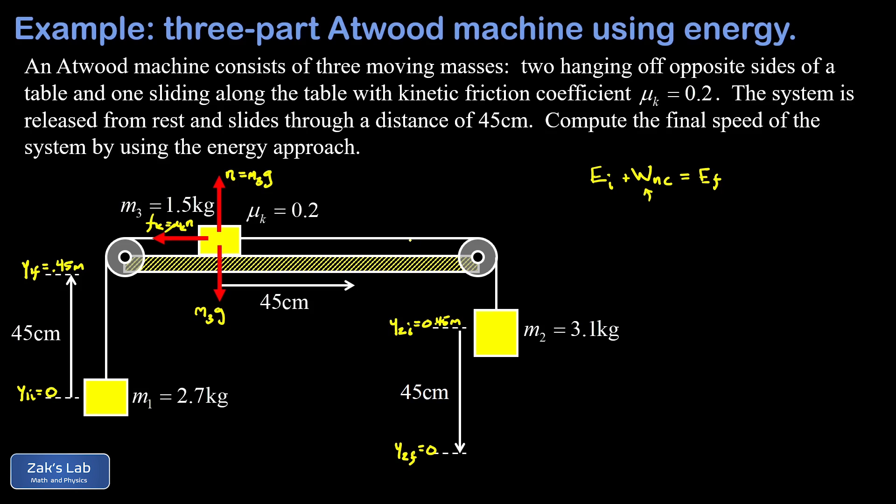Getting back to our statement of energy conservation, what are all the initial sources of energy? Note that there's no change in gravitational potential energy for the sliding mass, so the y coordinate there is zero the whole time. My initial mechanical energy is contained entirely in mass m2, which has a non-zero initial gravitational potential energy. The initial gravitational potential energy is zero for m1, and we're basically ignoring gravitational potential energies for m3. So we end up with a term that looks like m2 g y2_initial.